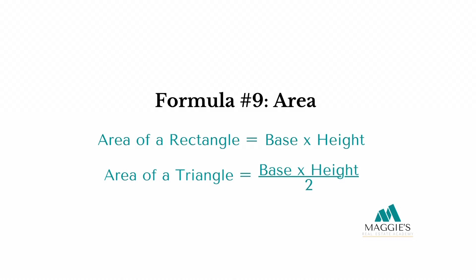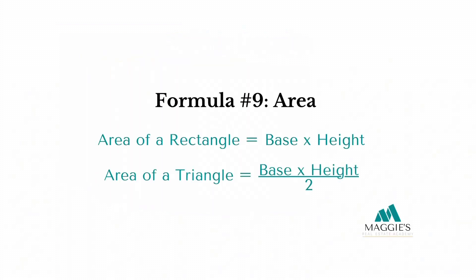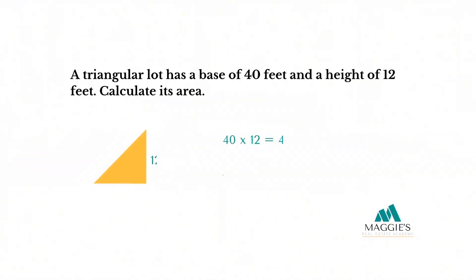Formula number nine: area of shapes. Area of a rectangle or square equals base times height. Area of a triangle equals base times height divided by two. A triangular lot has a base of 40 feet and a height of 12 feet — calculate its area. A triangle is half of a square, which is why you divide by two. Multiply 40 by 12 to get 480 square feet, then divide by two for a total of 240 square feet.